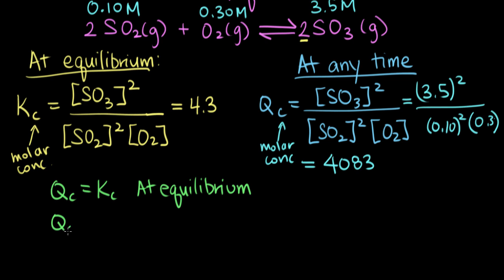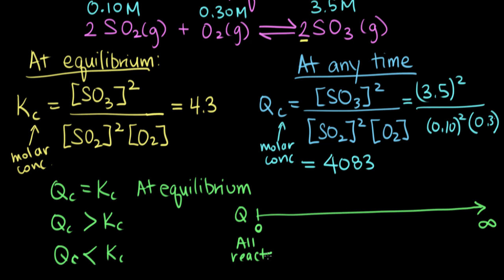The other two possibilities are that Q is greater than K, which is the case here, or Q can be less than K. We can draw all of the possible values of Q on a number line. Q can have values anywhere from 0 to infinity. When you have no product, your numerator is 0 and Q is equal to 0. So that tells us Q equals 0 when you have all reactants and no products. If you have no reactants left and all products, we have 0 in the denominator, and that gives us a Q value of infinity. So Q equals infinity means we have all products.